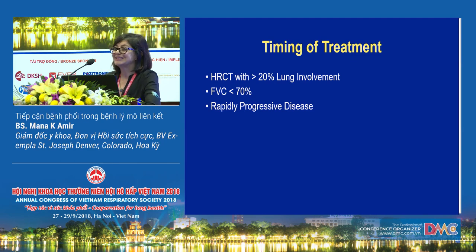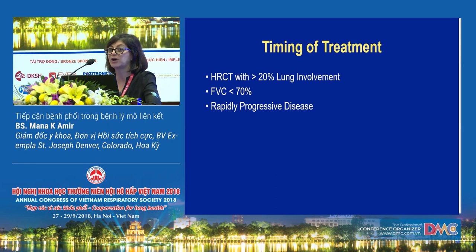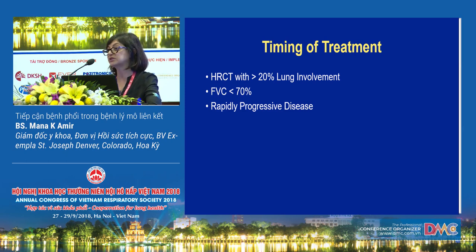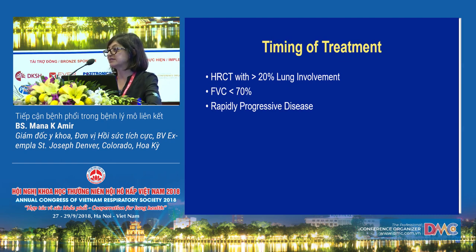What is the timing of treatment? Many patients present with ILD, but it's hard to know when to initiate immunomodulatory treatment. I would recommend considering treatment in patients who have more than 20% involvement of their lung on high-resolution CT scan imaging, in patients who have a forced vital capacity of less than 70%, and in those who have rapidly progressive disease. These are generalized guidelines from our clinical practice and every patient should be treated on a step-by-step basis.